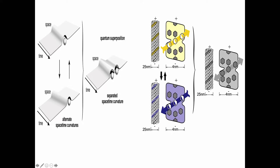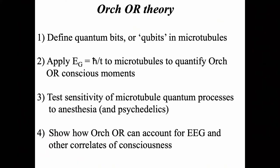A quantum bit in quantum computing means that information could be not just one or zero, but one and zero in superposition, then collapsed to one or the other as the solution. We needed a qubit in the brain specifically based on tubulin pathways — initially we said each tubulin was a qubit, but the tubulin pathway allows you to avoid decoherence because it is error-correcting. So the task was to define the quantum bits or qubits in microtubules, and apply E sub G equals ℏ over T — which Roger mentioned — to microtubules to quantify Orch OR conscious moments.